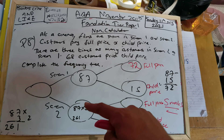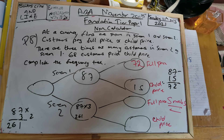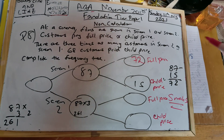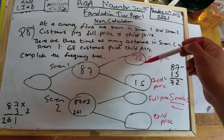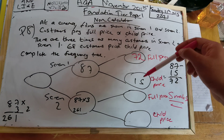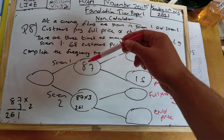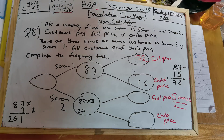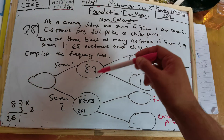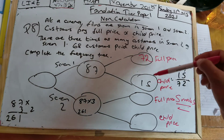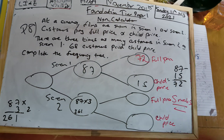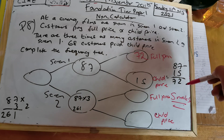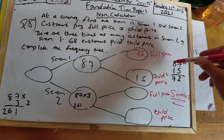The first part: this plus this has to make 87, so 87 take away 15 is 72. So 7 take away 5 is 2, and 8 take away 1 is 7 — giving us 72.